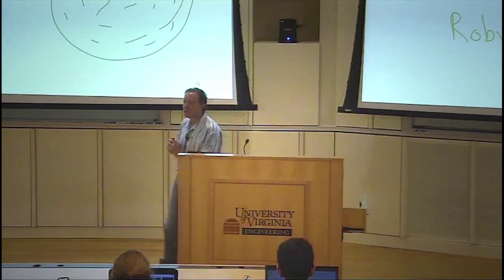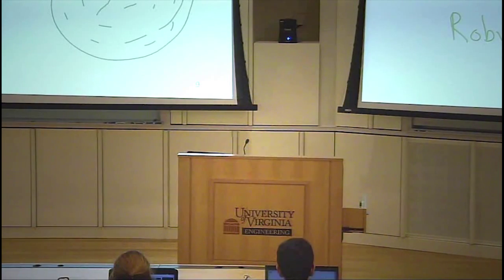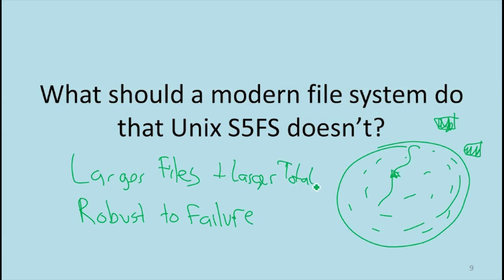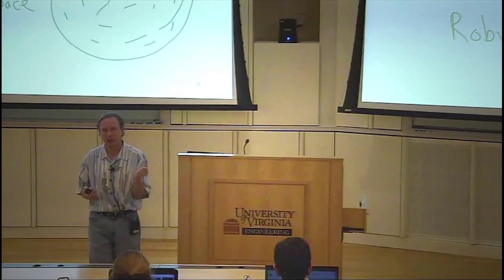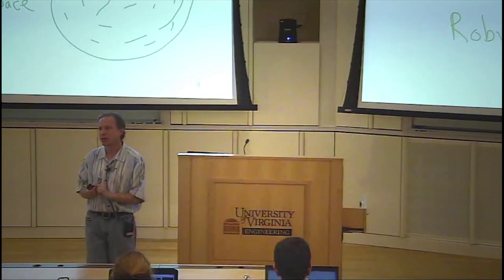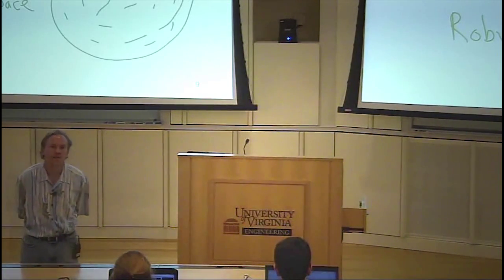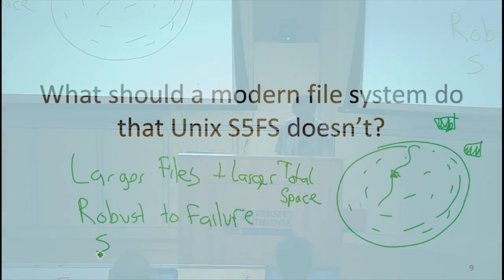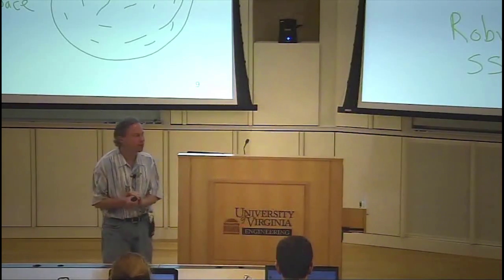Are there other things we'd like a modern file system to provide that System 5 doesn't? Larger capacity — so we need both larger files and larger total disk space. That might mean we need more than four bytes for an inode pointer, and we need to design things so we can scale to having either larger blocks or more blocks without too much overhead. Also, a file system might be on some very different kind of medium. We're going to talk about flash memory later today, which is a very different kind of storage medium than a hard drive, and that changes quite a bit about how you want to implement a file system.